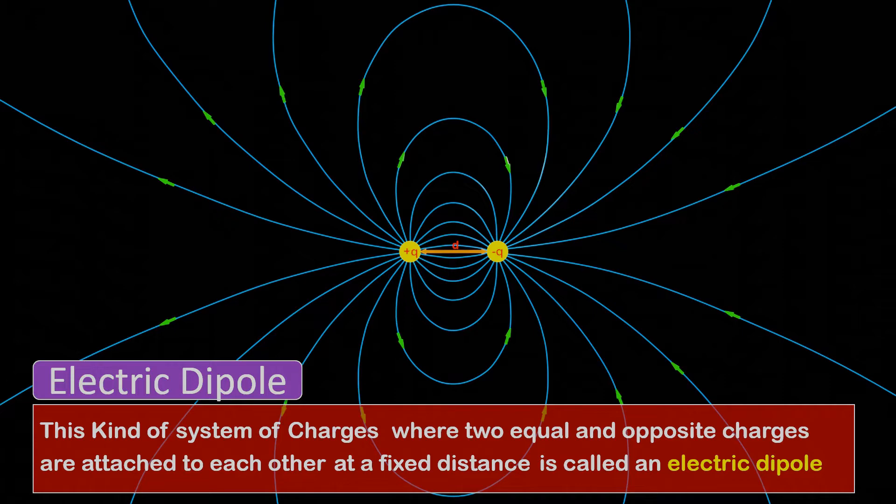Despite the net charge being 0, the reason the electric field is not 0 here is that the two opposite charges are not coinciding or overlapping. There is always some distance between them. Therefore, both charges create their own electric field, resulting in the observed electric field pattern as we just visualized.